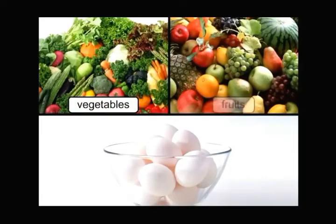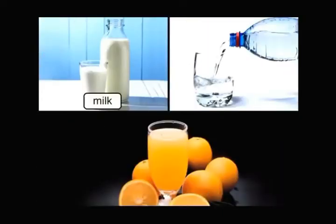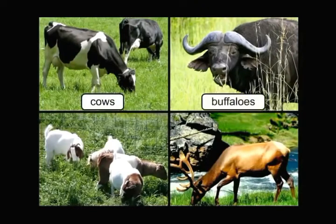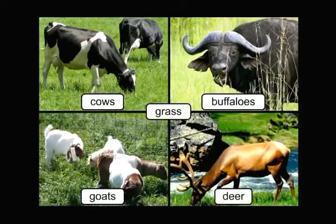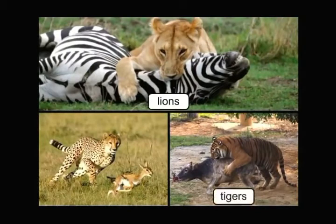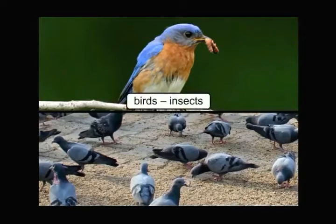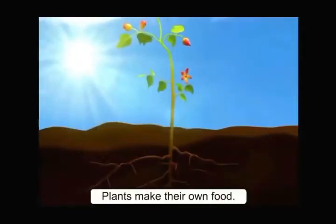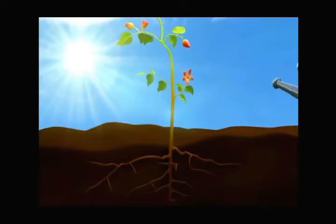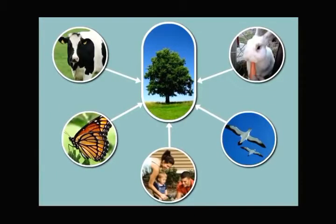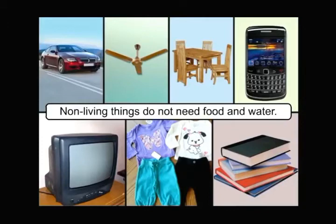Let's watch a video to understand this in a better manner. We eat vegetables, fruits, egg, etc. We drink milk, water, juices, etc. Cows, buffaloes, goats, and deer eat grass. Lions, tigers, and leopards eat other animals. Most birds eat small insects and grains. Plants are the only living things that make their own food — they prepare their food with the help of soil, water, and sunlight. All other living things depend upon plants for their food. Non-living things do not need food and water.